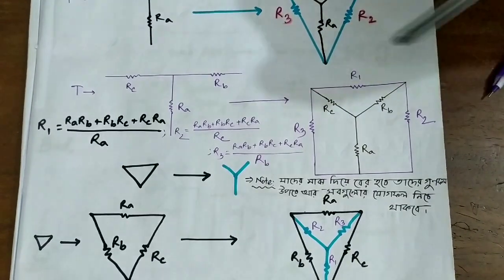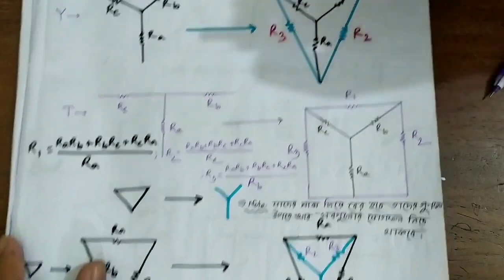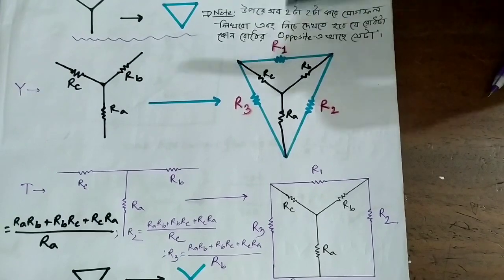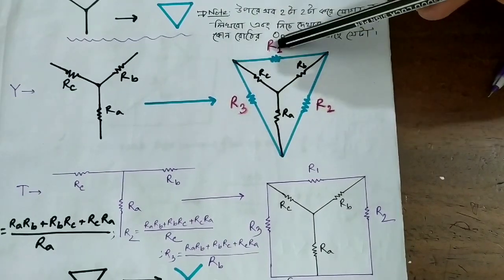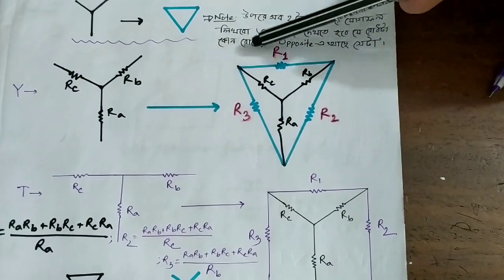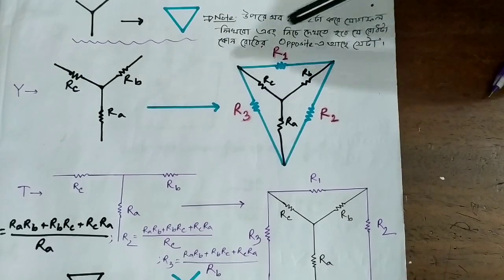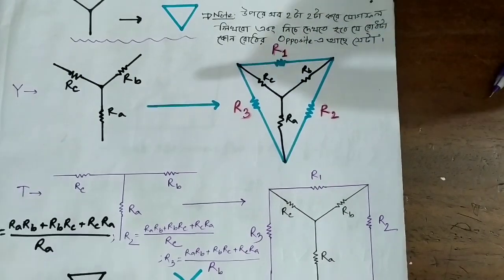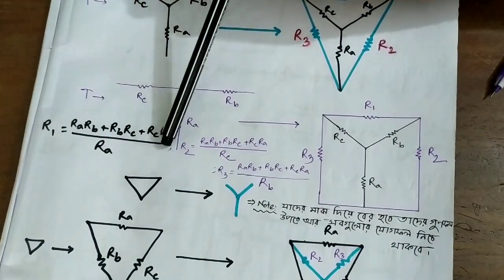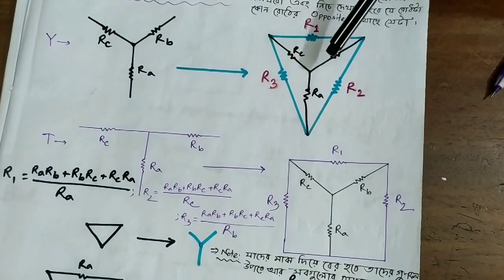It is very easy. The new R1, R2, R3 — how do we calculate them? R1 equals something. When Y becomes Delta, we take two delta values, the upper spoke, delta delta, and add them together.